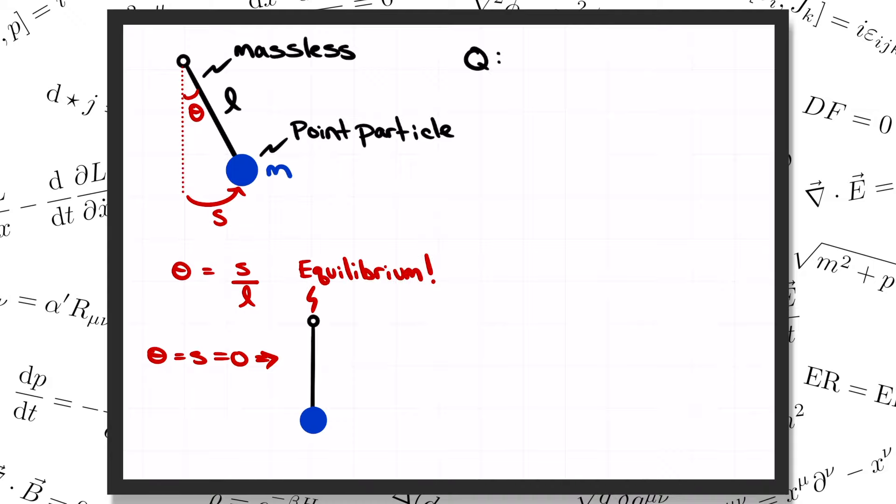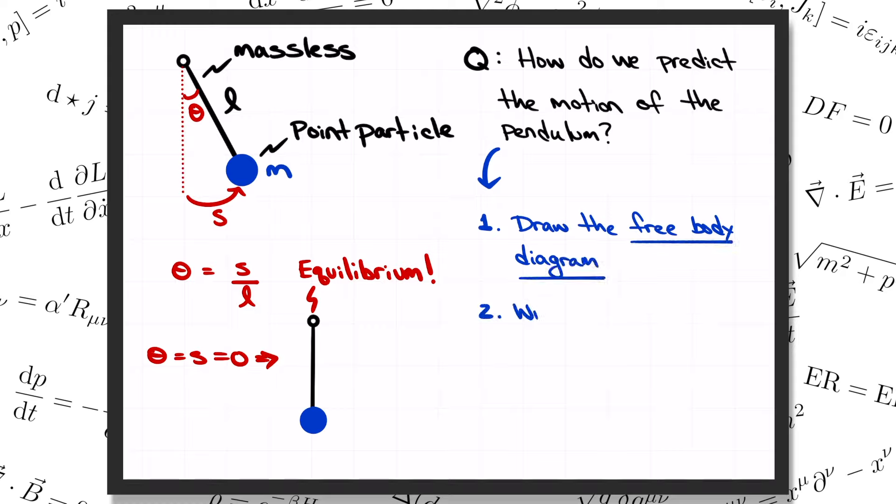The question that we want to learn to answer is how to predict the motion of the pendulum. So say if you were to pull it up to some initial angle and then let it go, or if you were to give the ball a kick to set it moving, what does the resulting motion look like? In Newtonian mechanics, we follow a three-step procedure. Number one, we draw the free-body diagram that shows all of the forces acting on the particle. Then in step two, we add up all the forces and write down Newton's second law: the total force equals the mass times the acceleration. Finally, in step three, we solve this equation to figure out the trajectory. So right now we're going to apply that three-step procedure to the pendulum.